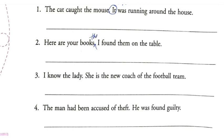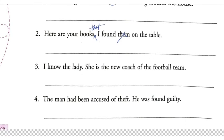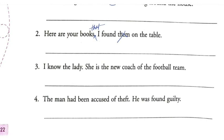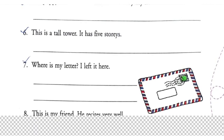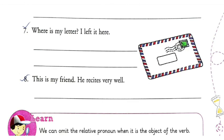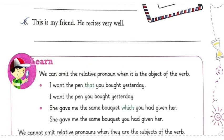For 'here are your books, I found them on the table' — you can write 'here are your books that I found on the table'. 'I know the lady. She is the new coach of the football team' — write 'I know the lady who is the new coach of the football team'. You should try exercises five, six, seven, and eight on your own; if you face a problem, let me know.